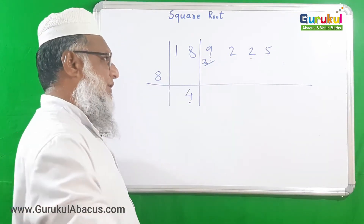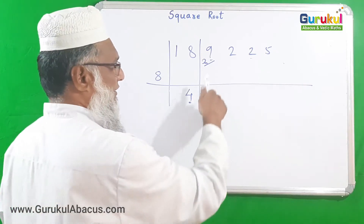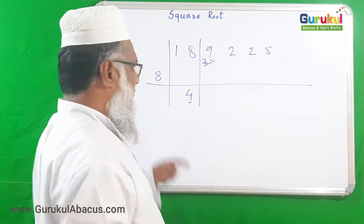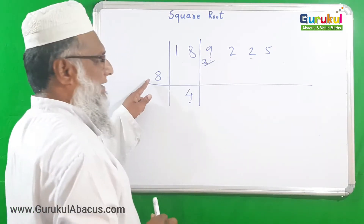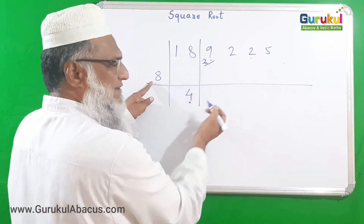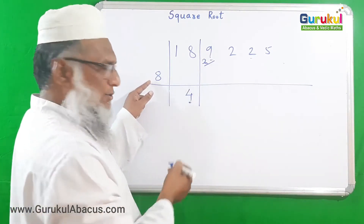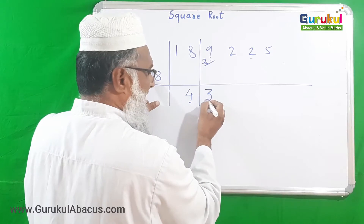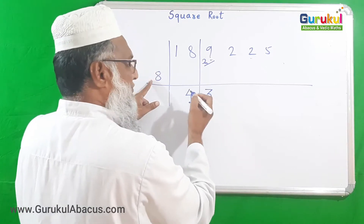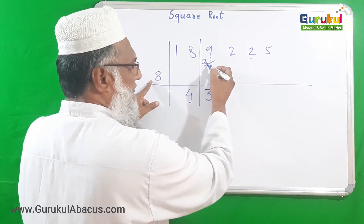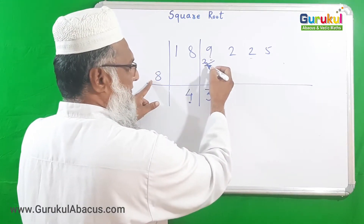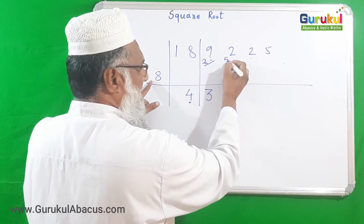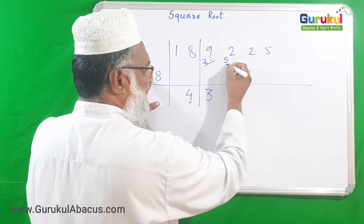Now we have 29 and our divisor is 8. We try 8 × 3 = 24, which is suitable. Subtracting 24 from 29 leaves 5. That 5 is written alongside the next digit 2, giving us 52 for the next step.